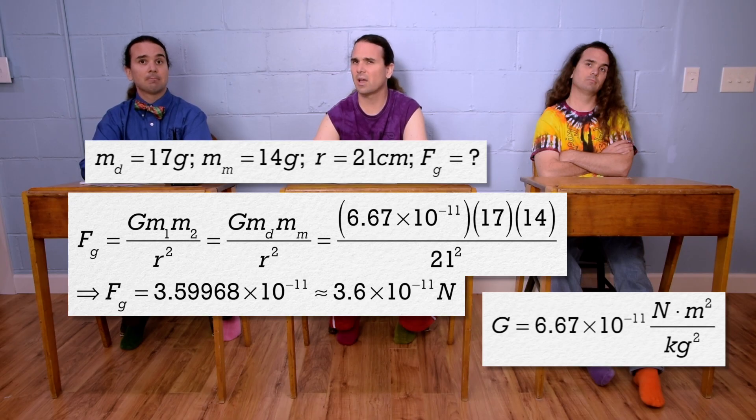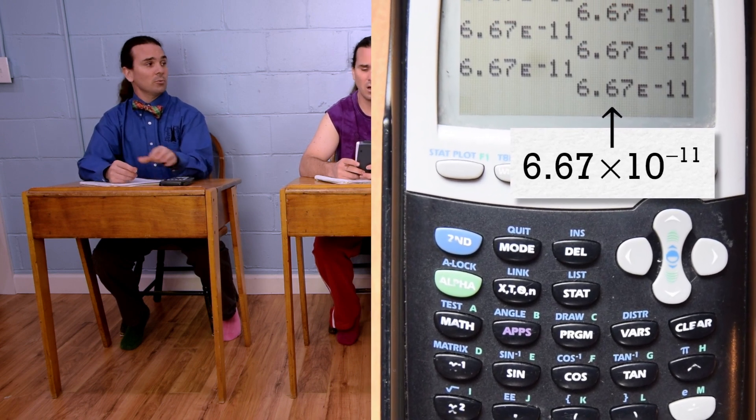How did you do the times 10 to the on your calculator? Oh, so that's the double E button on your calculator. So, 6.67 and then the double E button and negative 11 means 6.67 times 10 to the negative 11. Thanks. Oh, you're welcome.